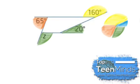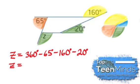So again, we can create an equation that subtracts our three given angles from 360 degrees. And when we work out this calculation, we find z is equal to 115 degrees.